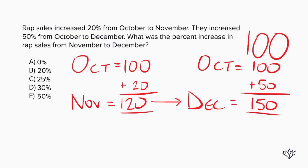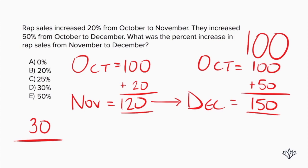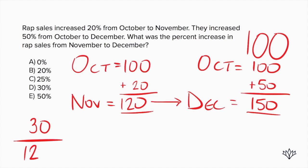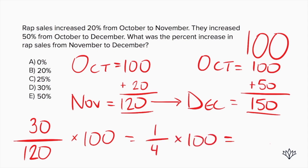What's the difference? We had 120, then we went to 150 — that's a change of 30. So 30 goes on top. And what's on the bottom? Our starting value is 120, because we're starting with November. So we have 30 over 120, then multiply by 100. 30 over 120 simplifies to 1/4, which is 0.25. Multiply by 100 — move the decimal two places — and we get 25%. Answer choice C.